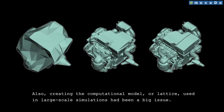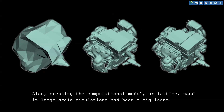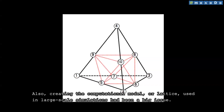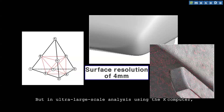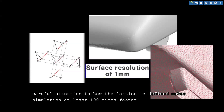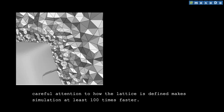Creating the computational model, or lattice, used in large-scale simulations had been a big issue. But in ultra-large-scale analysis using the K-Computer, careful attention to how the lattice is defined makes simulation at least 100 times faster.